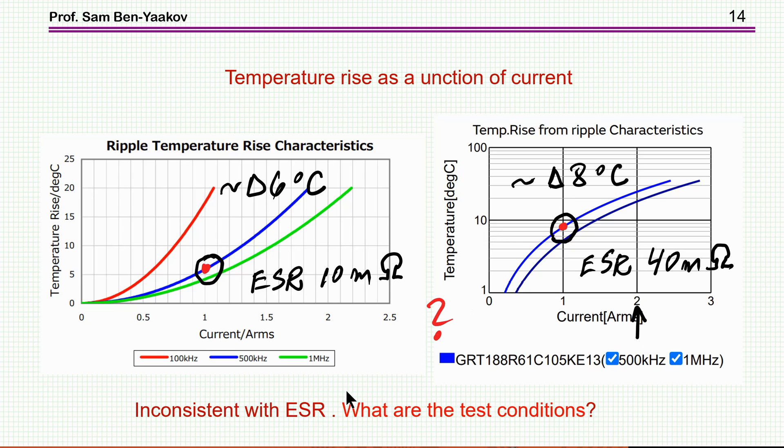Now, this is really inconsistent with the ESR, because the ESR here is 10 milliohm. Here, it's 40 milliohm. You would expect the temperature rise to be much higher. Actually, it's supposed to be four times larger than this, not just by 2 degrees, so it should be four times. So, the question is, what's the reason for this?